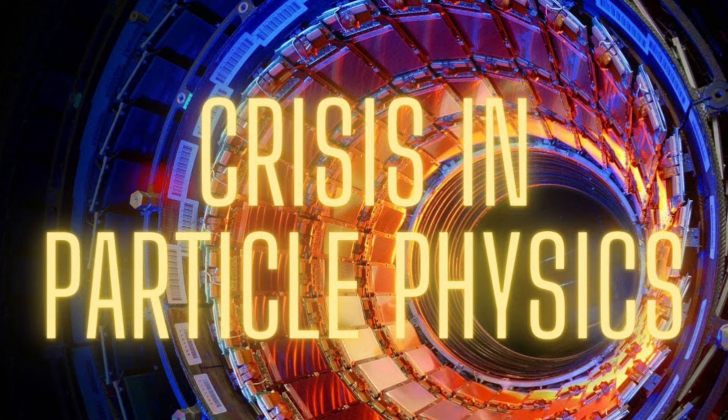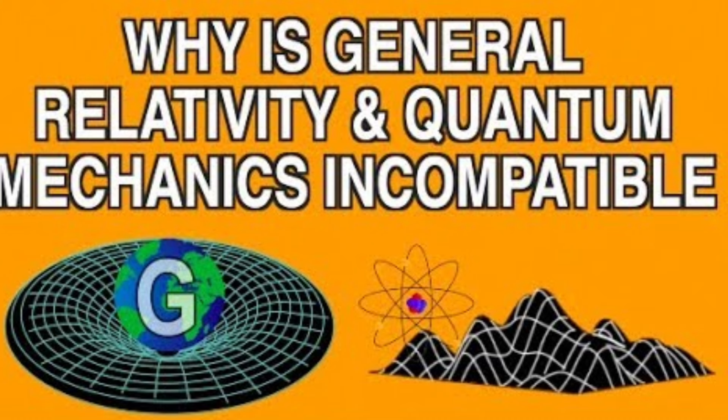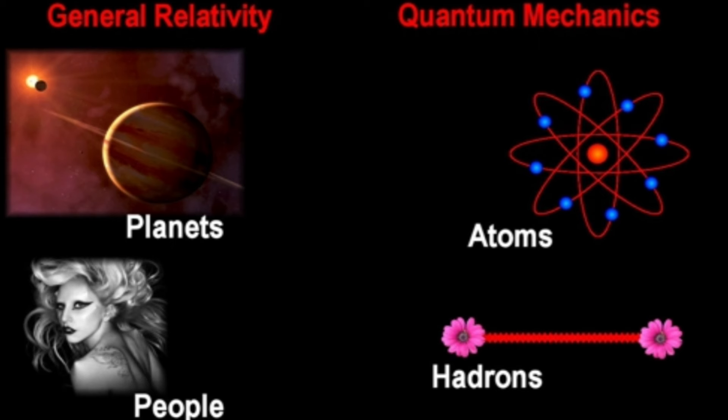Quantum mechanics describes the behavior of matter and energy at the smallest scales, such as atoms and subatomic particles. General relativity describes the behavior of space and time at the largest scales, such as planets, stars, and galaxies.